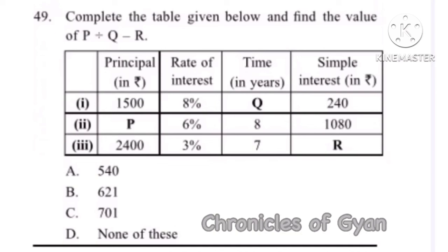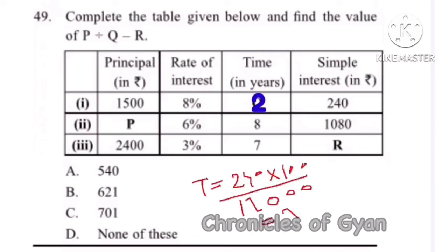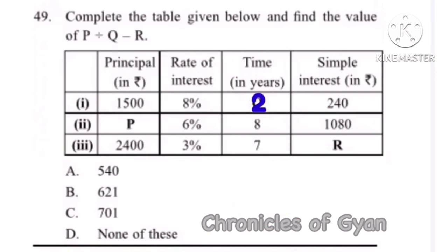Question 49: Complete the table and find the value of P divided by Q minus R. First, find Q using the formula SI = PRT/100, rearranged to find T, giving T = 2 years. Then rearranging the formula to find the principal P gives Rs. 2250. Substituting all values into SI = PRT/100 gives the simple interest as Rs. 504. Finally, P divided by Q minus R equals 2250 divided by 2 minus 504, which equals 621.